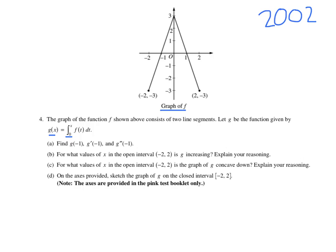This is very typical where we're going to have to find a g value, a g prime value, and a g double prime value. They're going to talk about when is g increasing and when is g concave down. So just to summarize: g is increasing — we're going to look at g prime. For concave down, we're going to look at g double prime. And then they're going to finish it off by asking us to roughly sketch g. That's where we're going with this one.